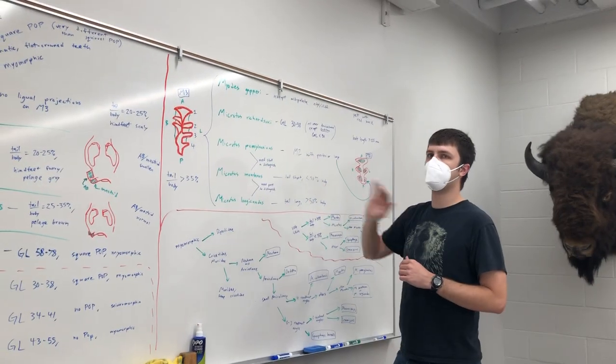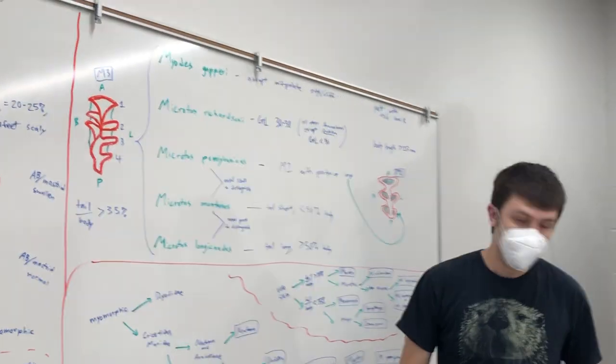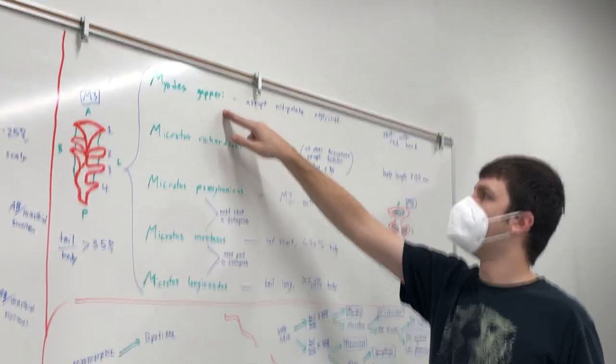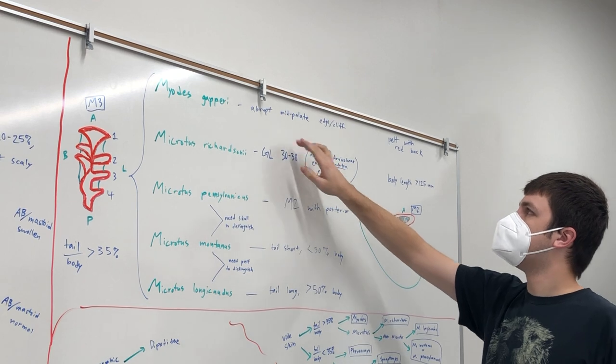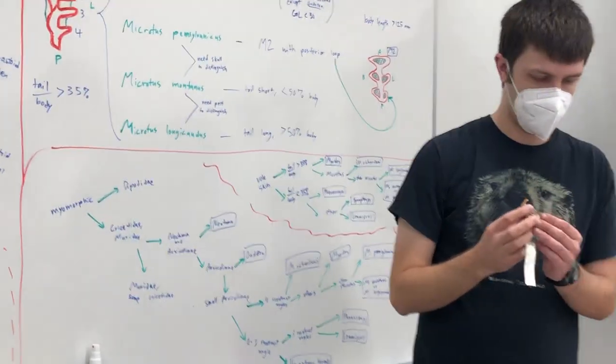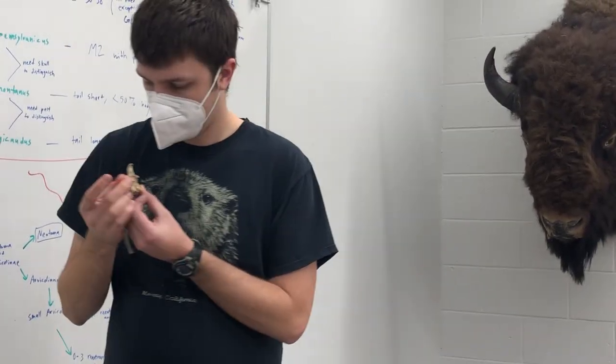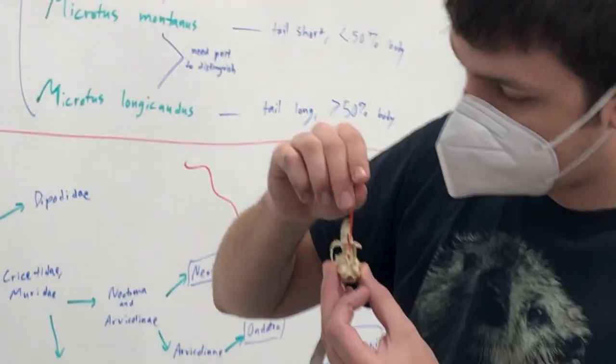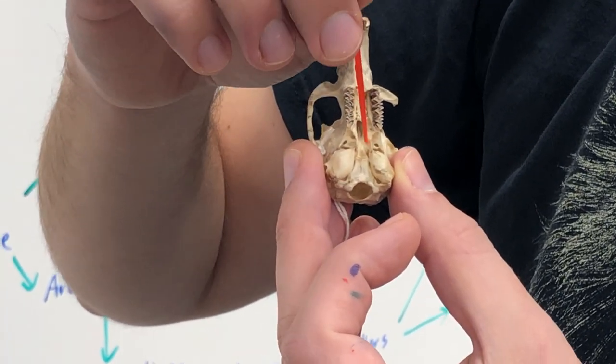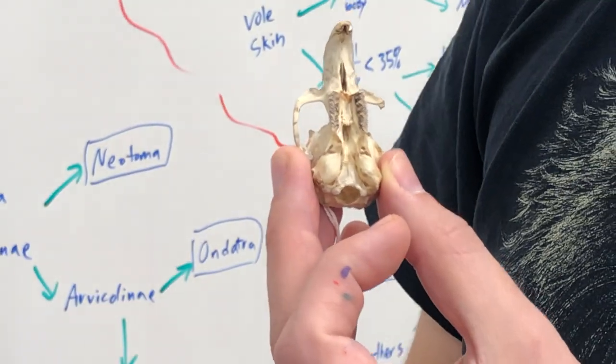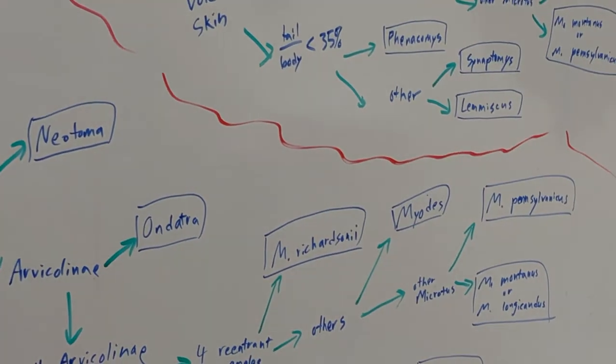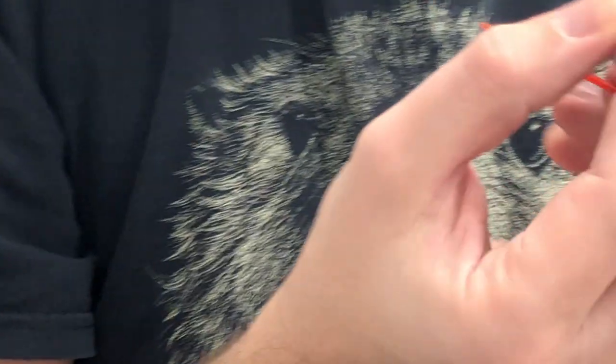So then for these species that have four re-entrant angles, these top two are pretty easy to tell apart. Myodes gapperi, so this is the red-back vole, has this abrupt mid-palate edge or cliff. And what I mean by that is, for example, looking at this Ondatra zibethicus, this is the palate and then here it like falls off and there's a sharp line and then you get to this lower part there. On a lot of the small voles, it's not that way. But for Myodes gapperi, it is.